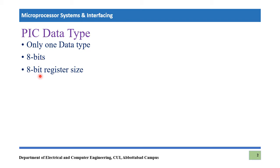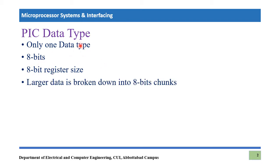With an eight-bit register size, there is only one data type. If one needs to deal with larger data, for example 16-bit or 32-bit processing, it can be done by breaking down the complete data into chunks of eight bits. Every chunk will be a composition of eight bits, so that is how one can process larger data sizes, but at a time you can process only eight bits.